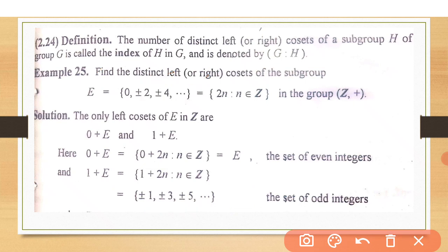E and 1 plus E are the distinct left cosets, and these are one and two. This means that H, which is E here, has only two left cosets in Z. There is no other left coset. It means that its index is 2. If we find three left cosets, then the index will be 3.